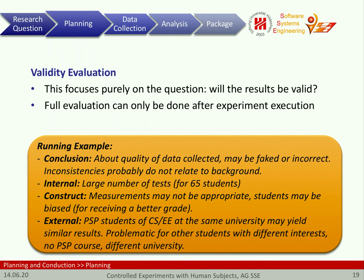In our running example, conclusion validity is about the statistical testing needed. A concern here is that the quality of collected data may be faked or incorrect, because people did the actual execution as homework and can write down anything. That is definitely an issue for data collection and conclusion validity. However, as inconsistencies will not be systematic, faked or incorrect data will likely stand out as outliers in our tests, and we can identify and remove such data.